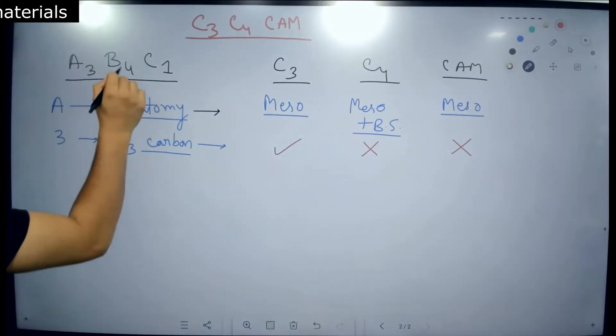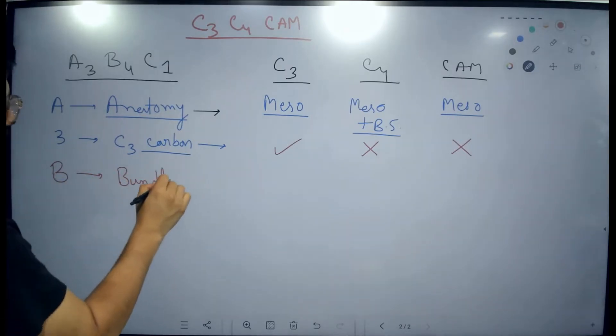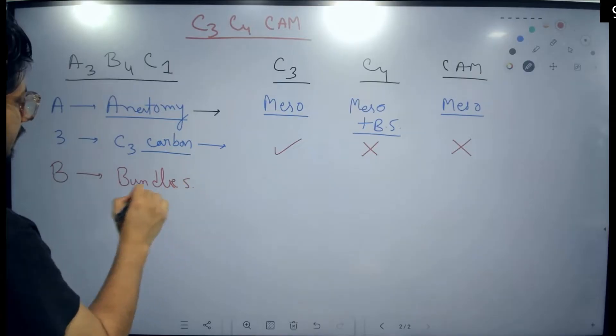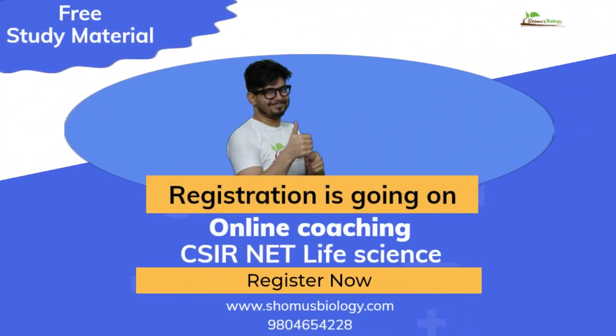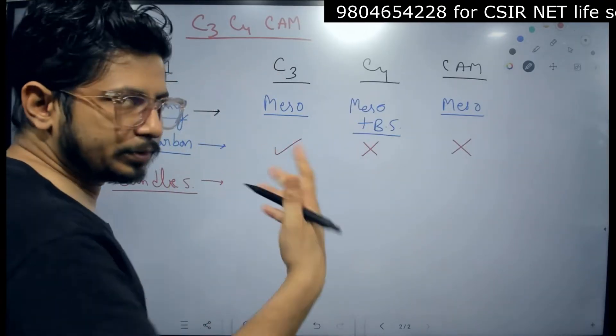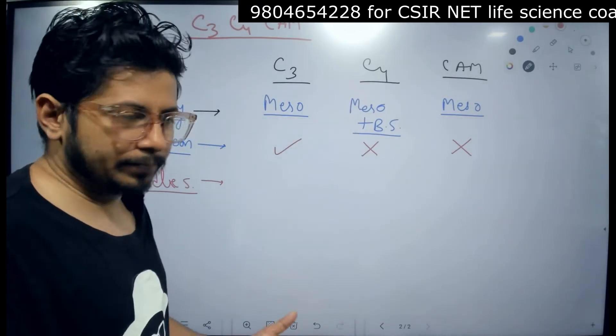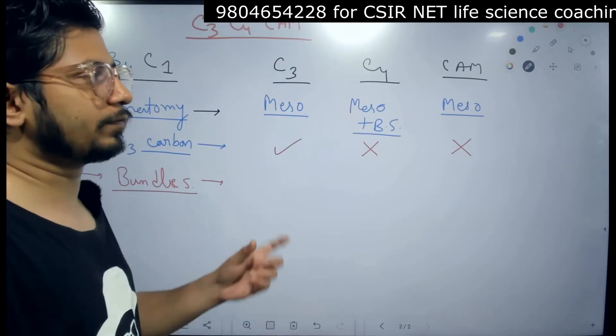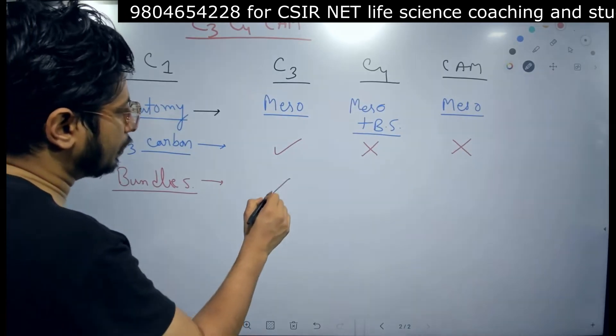Then we come to B. B for bundle sheath again. Bundle sheath cells. If you want to talk about the bundle sheath cells, in case of C3 plants we have the presence of bundle sheath. Obviously the bundle sheath is present, but do you require the process of photosynthesis in C3 plants to engage bundle sheath cells? The answer is no we don't need that.